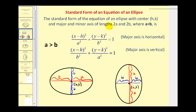Now, if we have the standard form of an ellipse, we can gather a lot of information about the graph. The standard form of the equation of an ellipse will have center h, k. The major axis will have length 2a, and the minor axis will have length 2b. If the ellipse is in this form, we can identify the center of the ellipse very similarly to how we did for the circle.